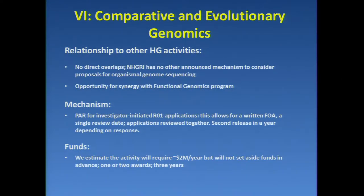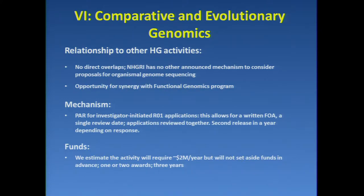The mechanism we're proposing is a PAR, which just means we're going to announce that we're interested in investigator R01 applications. It allows for a written FOA so we can put some definition on what we want. It allows for a single review date and for applications to be reviewed together by a study section convened by NHGRI. We would consider a second release a year on, depending on what kind of response we get. We don't propose to set aside any funds, and we estimate that the activity will require about $2 million a year, which would cover one or two three-year awards.